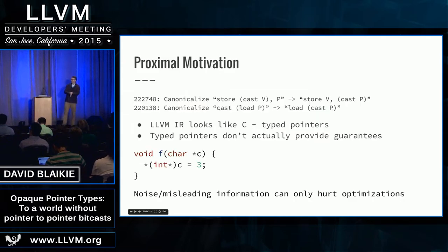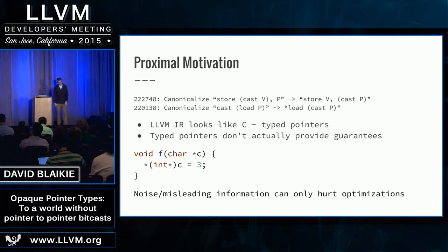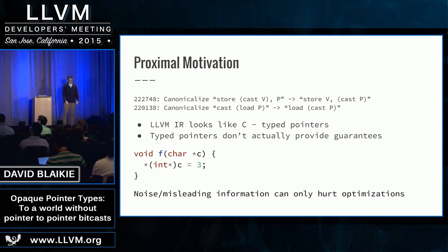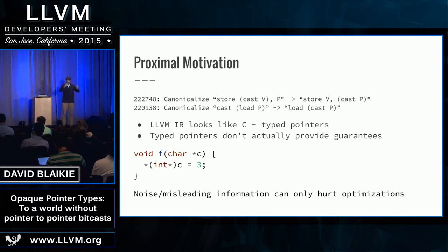Why we're doing it. About a year ago — this is where it came to my attention at least — Chandler committed a couple of patches relating to canonicalization. We used to canonicalize a store and a load based on the type that the pointer you were loading or storing to was, and then casting the value back and forth. This produced less good outcomes. So we switched to the opposite: we cast the pointer and then store or load using the natural value type. That made things better, but it's not the only one of these sort of bugs, and we would like to reduce the number of these sort of issues.